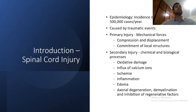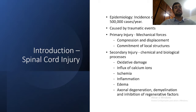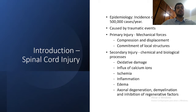Talking about spinal cord injury: spinal cord injury occurs in between 250,000 and 500,000 people per year, caused by traumatic events. First, mechanical forces such as compression and displacement cause the disruption of cell membranes and blood vessels, and destroy local neurons. This process induces a cascade of chemical reactions and biological events, leading to a secondary injury in addition to the initial injury.